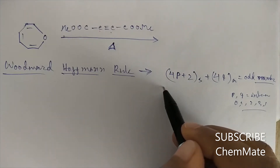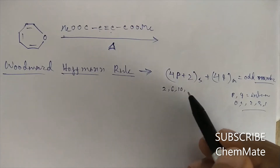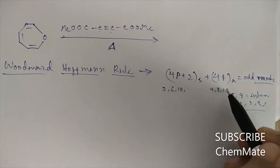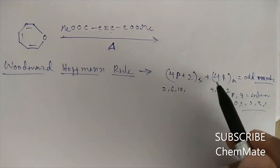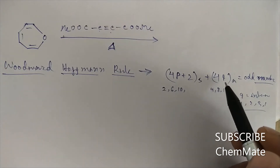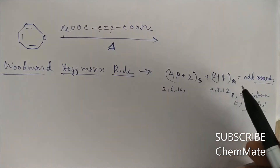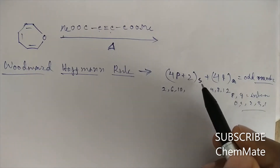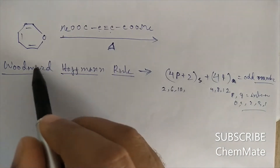4p plus 2 gives electron counts of 2, 6, 10, and 4q gives 4, 8, 12. These represent the number of electrons in each component. The mode of addition is either supra or antara. Generally, pericyclic reactions occur in supra mode, so we can eliminate the antara mode.